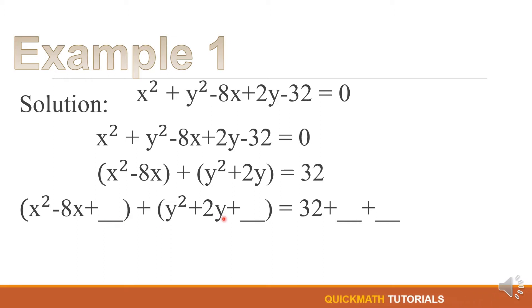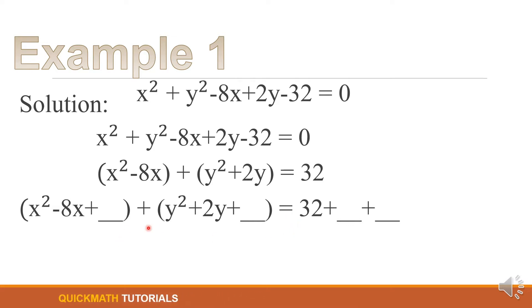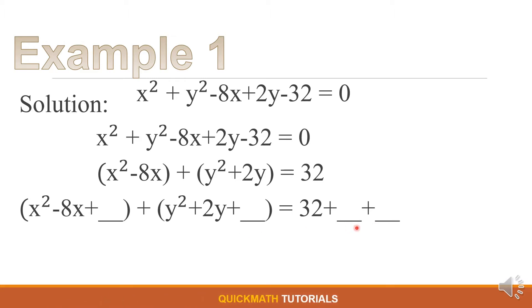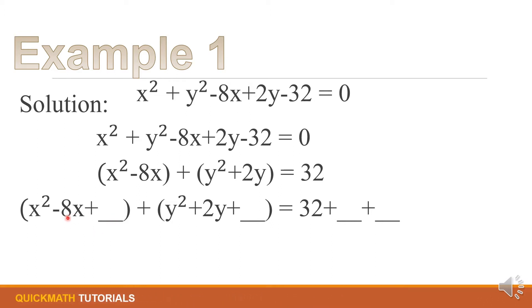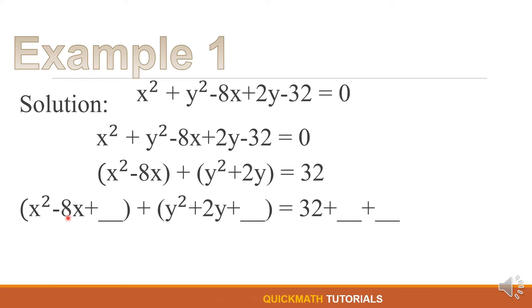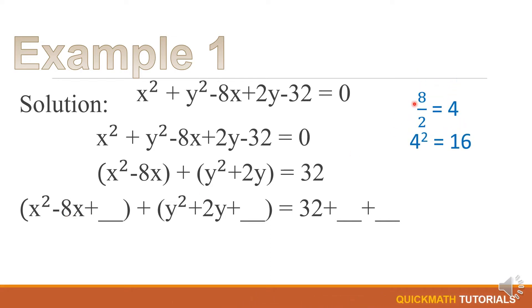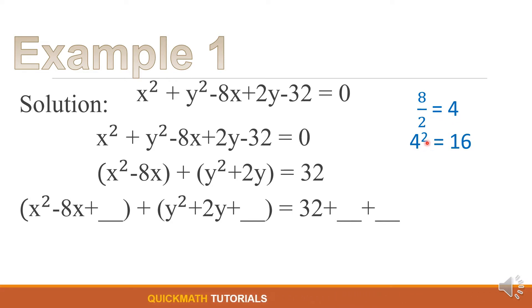For our second step, we will add one blank for x and one blank for y, and since we add two blanks on the left side, we will also add two blanks on the right side. This process is what we call completing the square. To find the third term of x, just focus on the coefficient of the middle term regardless of the sign. Here in x the coefficient is 8, so 8 divided by 2 equals 4, and 4 squared equals 16.